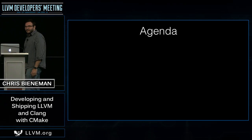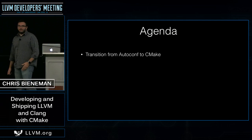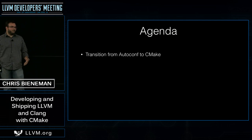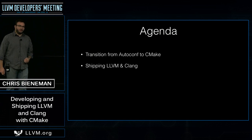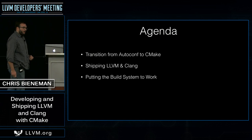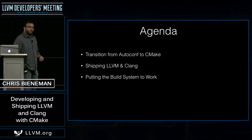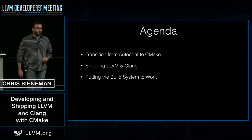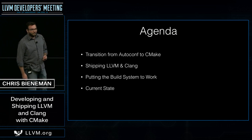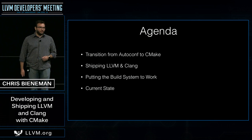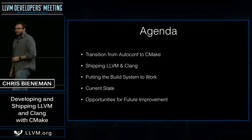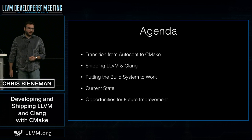My talk is going to cover a couple different topics today. I'm going to start by talking about the LLVM community's transition from AutoConf to CMake as the primary build system. I'll walk through an example of how you can use CMake to ship a build of Clang and LLVM, talk about ways to put the build system to work for you, making your workflows more efficient. I'll also cover the current status of the build system and finish up with some future opportunities for high-value improvements.